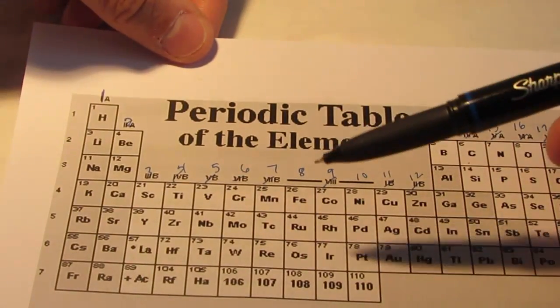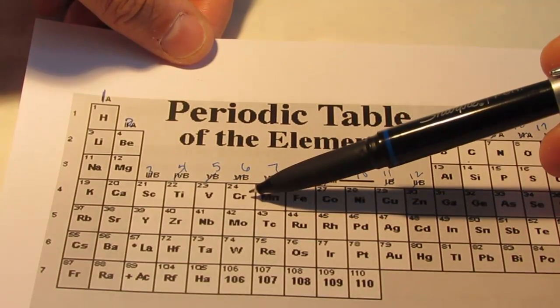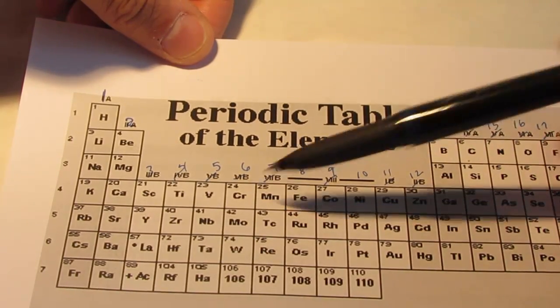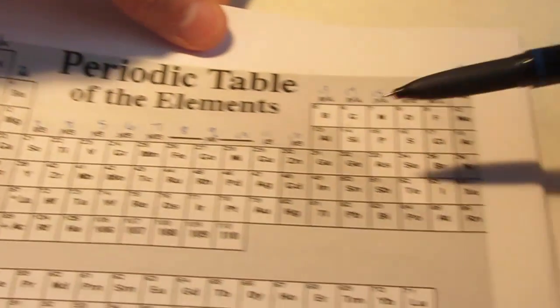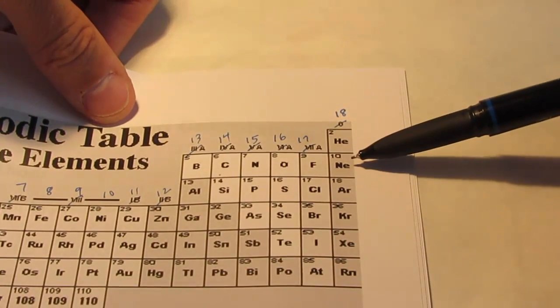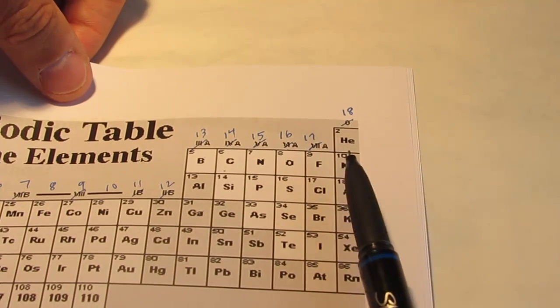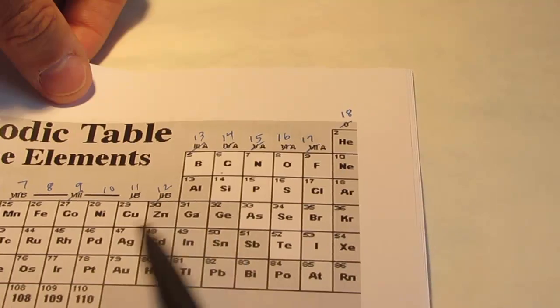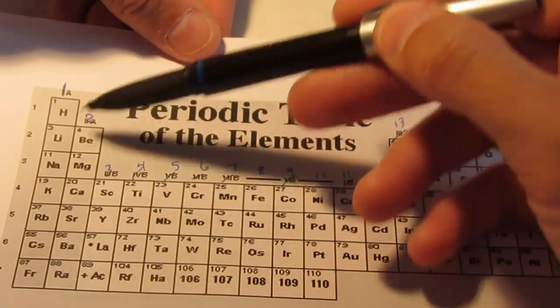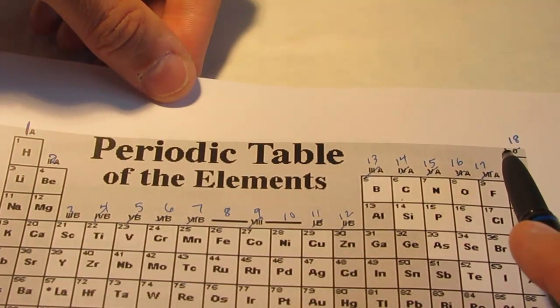Now, many of these elements, if I point to a symbol, you should know their properly spelled name. For instance, if I pointed to this element right here, CR, you should know that that's the element chromium. That's on your list of 50 elements that you'll need to know for the year. If I point to AL, you should know that that's aluminum. If I pointed to NE, you should know that that is neon. Don't worry about these numbers right here beside each element. We'll get to that in just a couple of weeks.